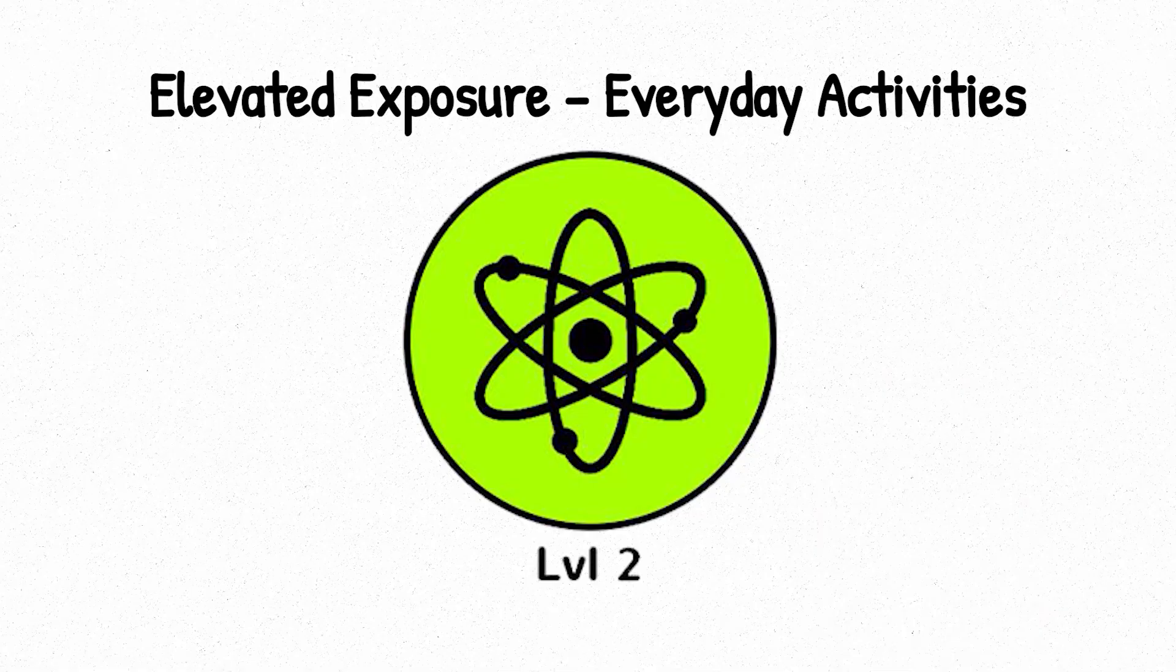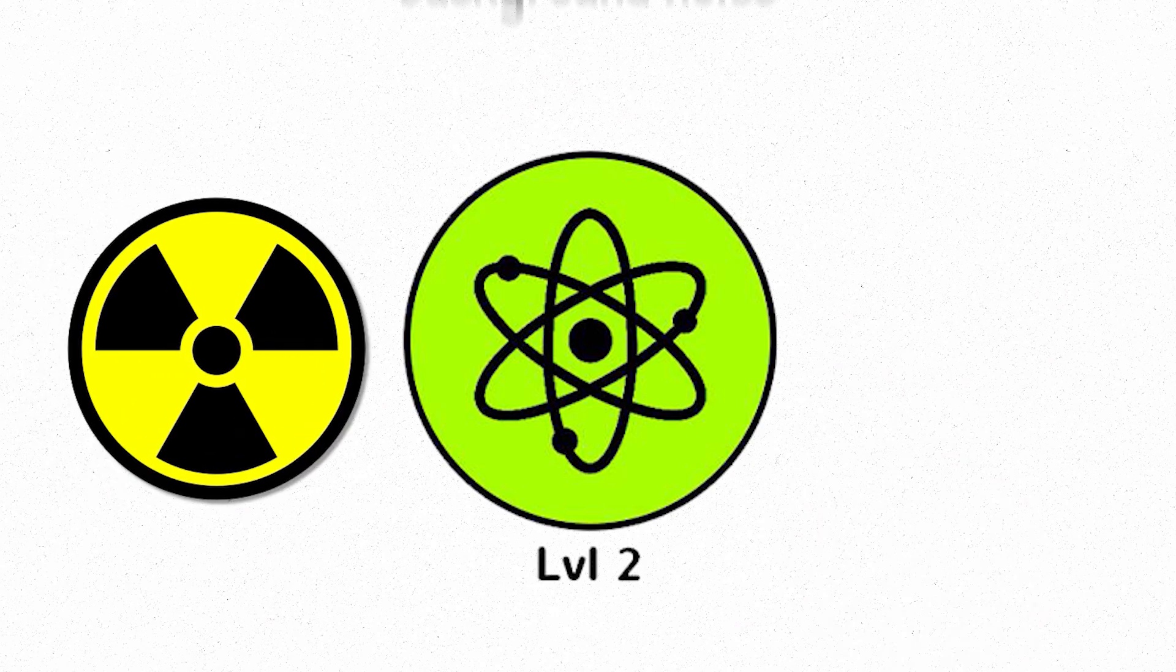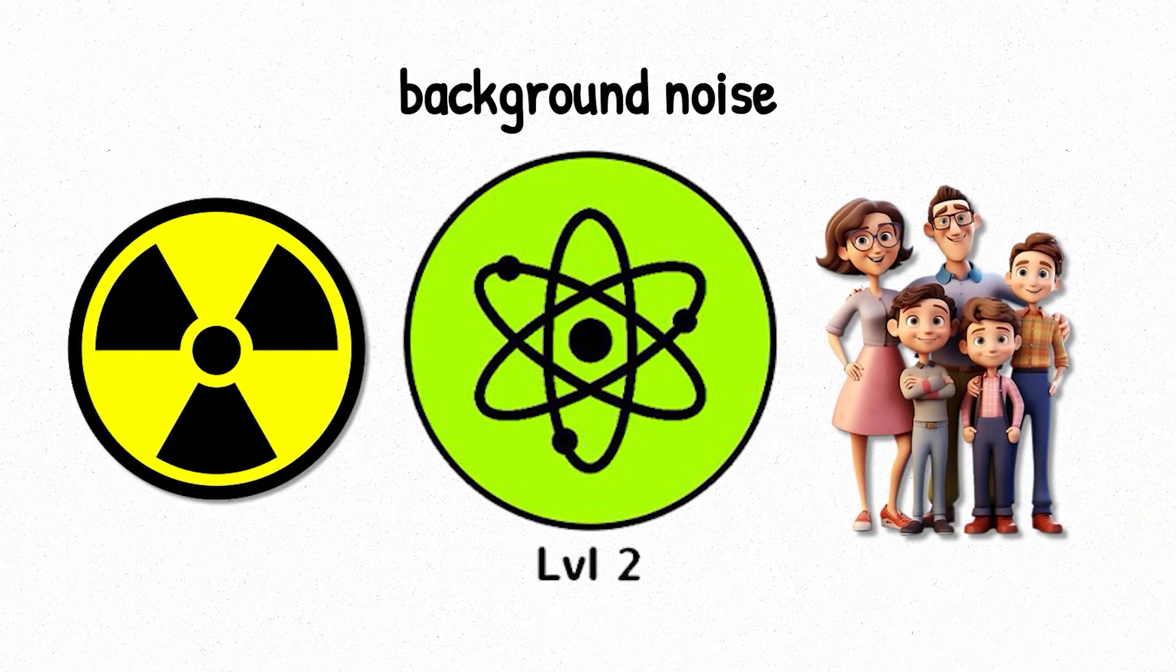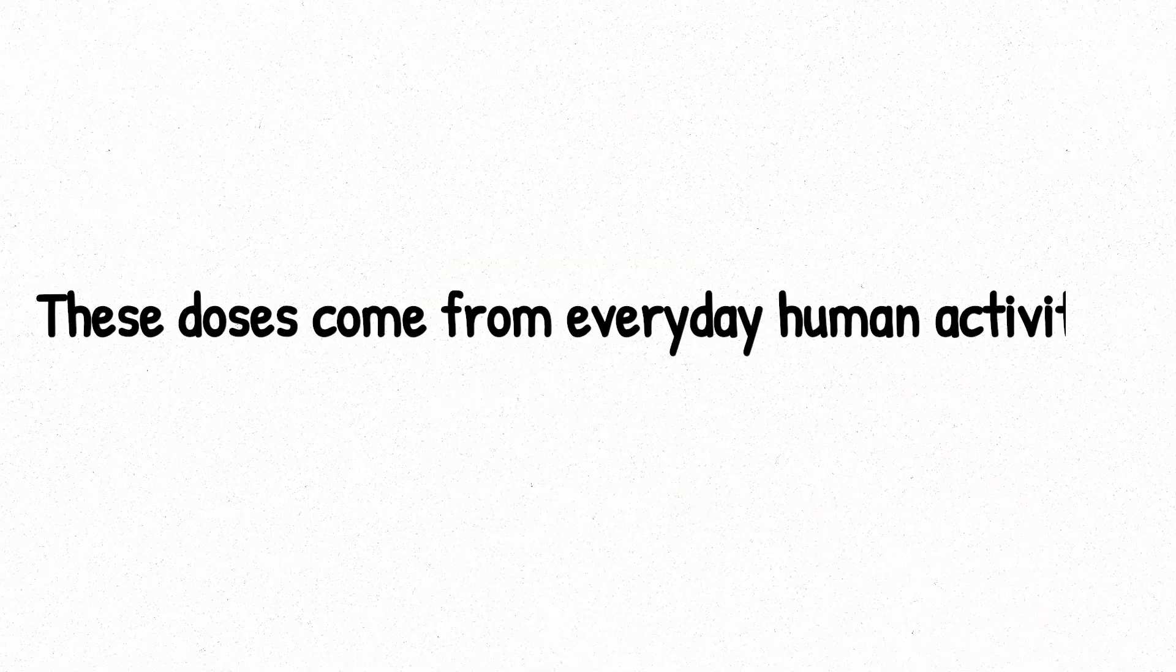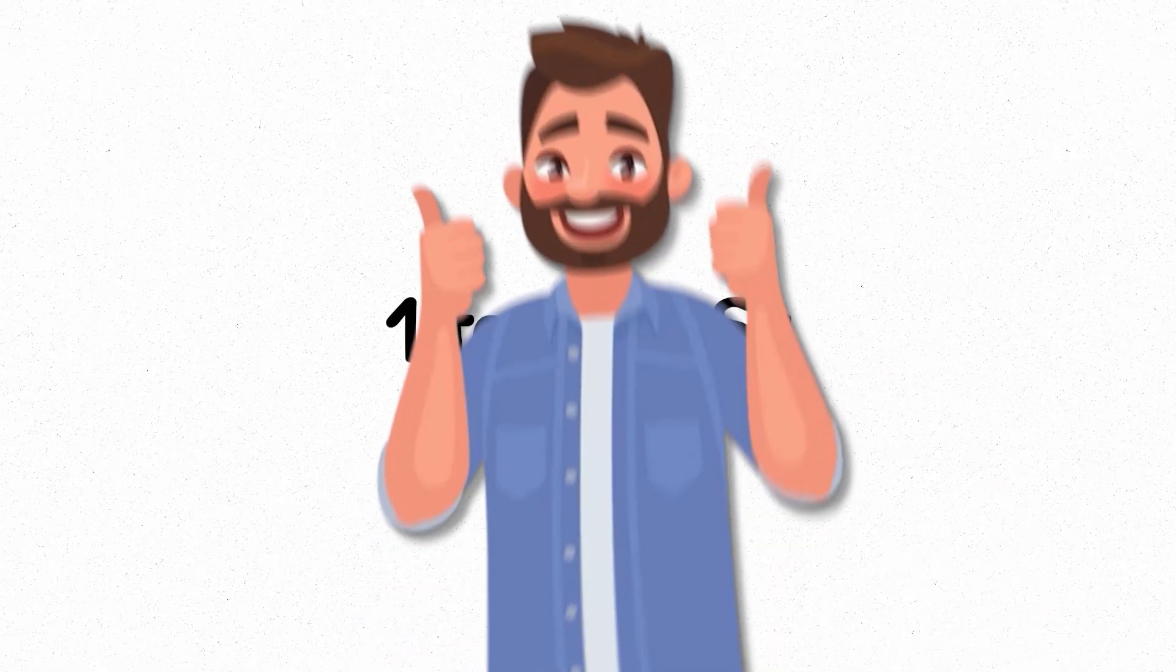Level 2, elevated exposure, everyday activities. Level 2 is where radiation goes from passive background noise to something we start adding to our lives. Still small, still safe, but no longer just natural. These doses come from everyday human activities. And they range from 1 to 100 microsieverts, depending on what you're doing.